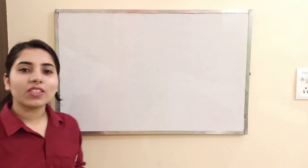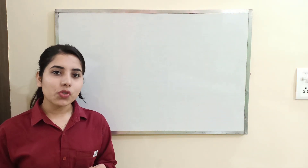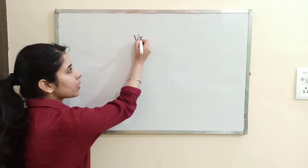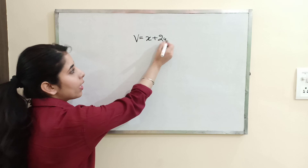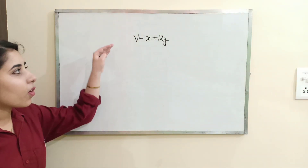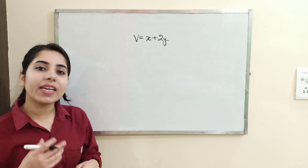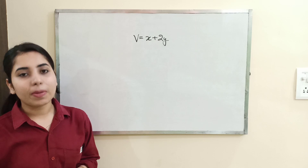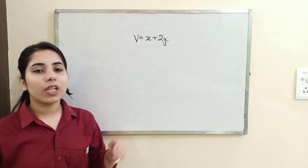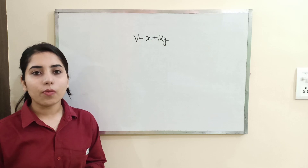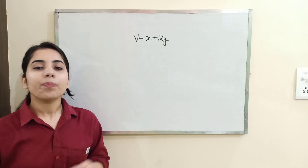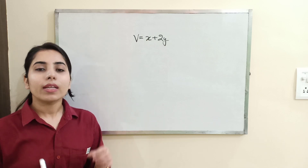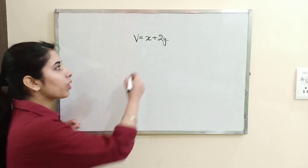The first trick is related to the situation whenever a potential expression is given to you. For example, the potential expression is given as x plus 2y. You want to know the corresponding momentum expression which will show the conserved quantity or constant of motion in terms of momentum. If you have a question of this kind where the options contain momentum terms, here is a trick to easily find the conserved quantity.